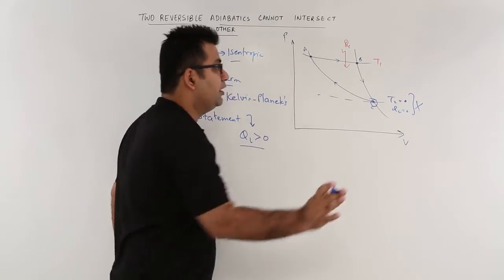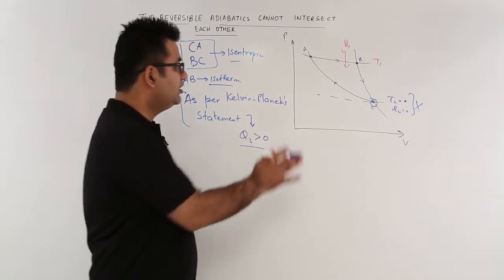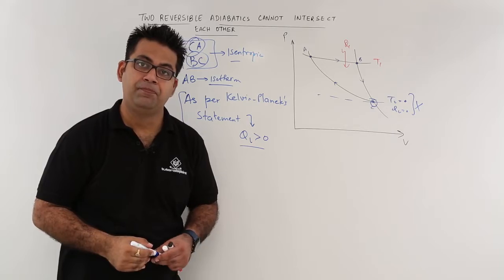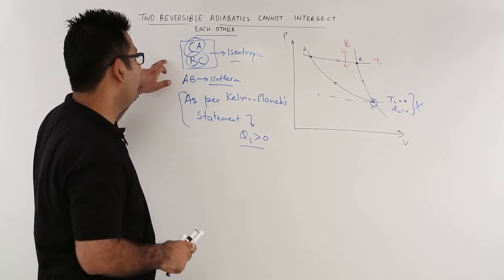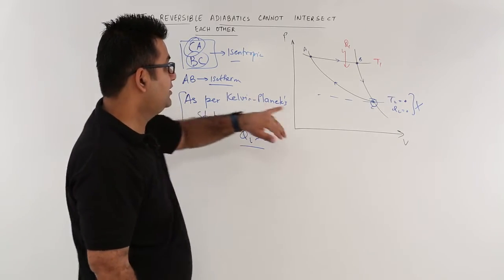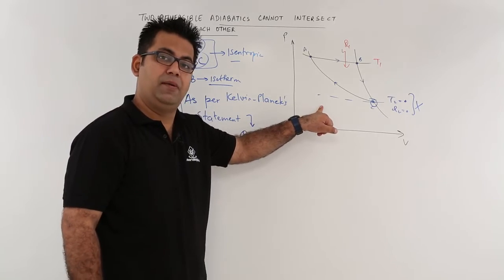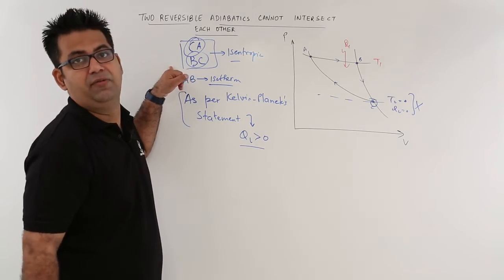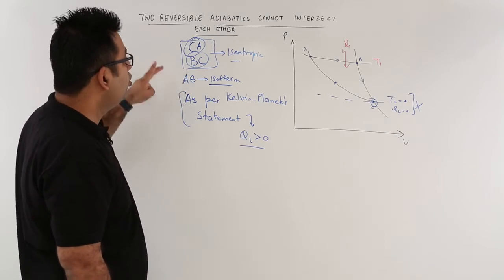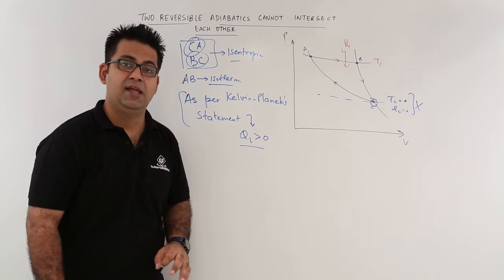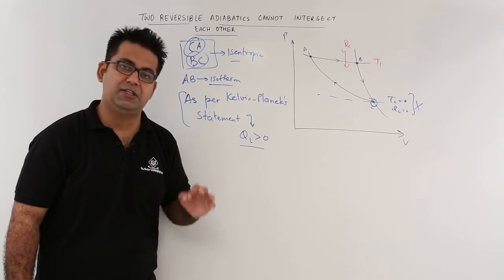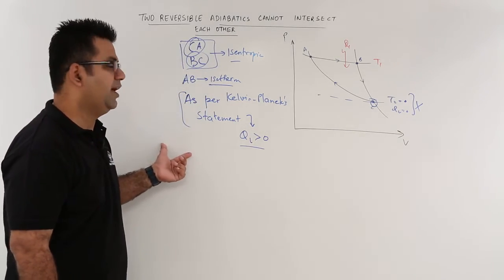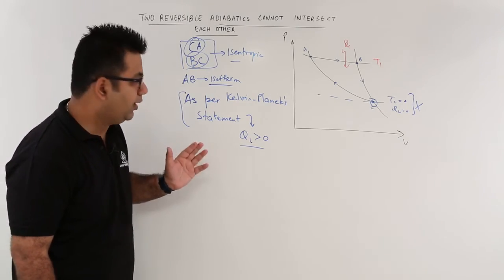This kind of arrangement is not possible. Now what is this arrangement telling us? We are intersecting these two isentropic lines. Because these two isentropic lines were intersecting, this kind of arrangement showed up. But this arrangement is not valid. So this proves that two isentropic lines can never ever intersect each other because it creates a cycle which ultimately violates the KP statement for the second law.